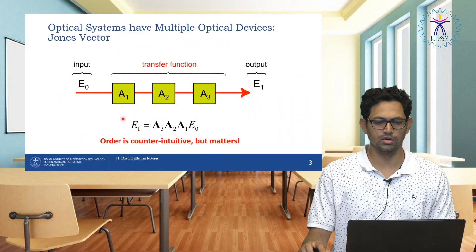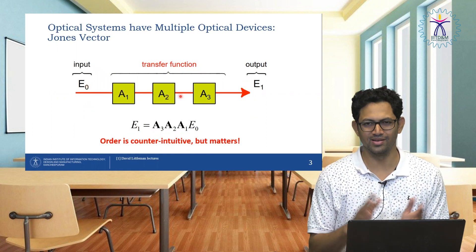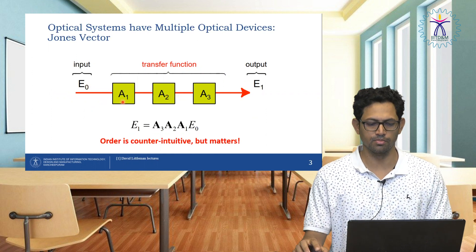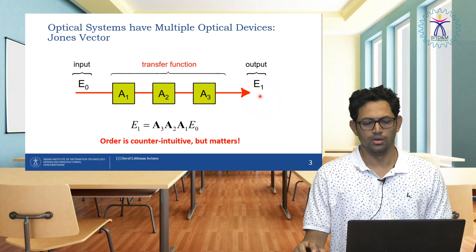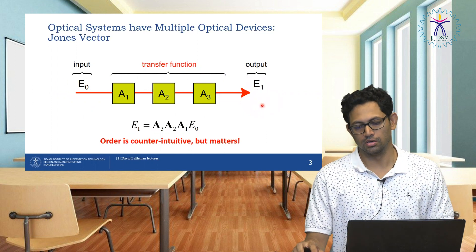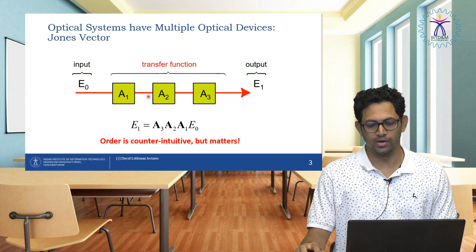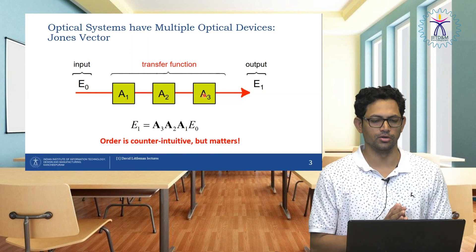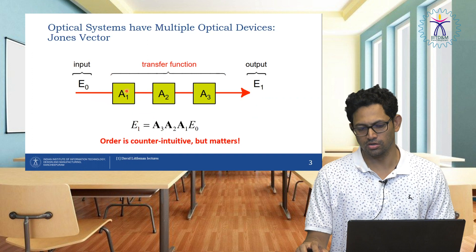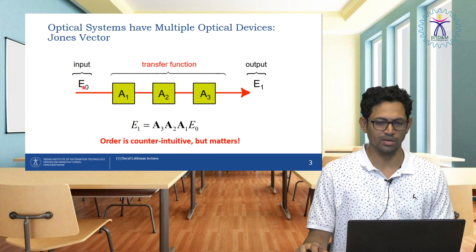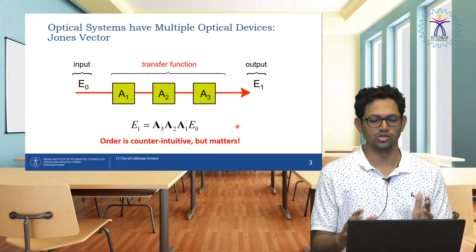As we discussed earlier, you give an input defined as a Jones vector, and then you go through a series of optical elements. The transfer function of each optical element can be given as a1, a2, and a3. The output is e1, while the input is e0 — that is a Jones vector. Each optical element is defined by a Jones matrix. The output e1 equals the product of all transfer functions a3, a2, a1 multiplied with e0. This order is required to get the actual final output.